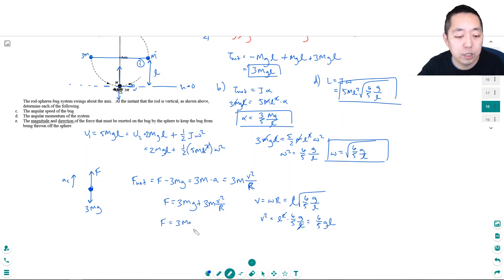So my force here would have to be 3mg plus 3m—plugging this in here—times six-fifths gl. And then the r here is the radius of the circular path he's taking, which is also l. So that l cancels, so that's 3mg plus 18-fifths mg, which is 33 over 15 mg.